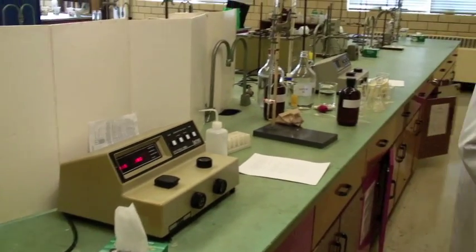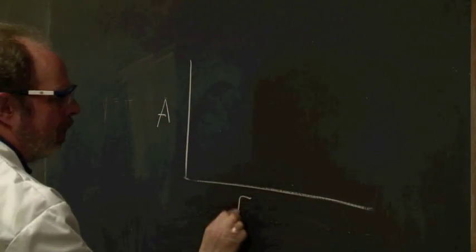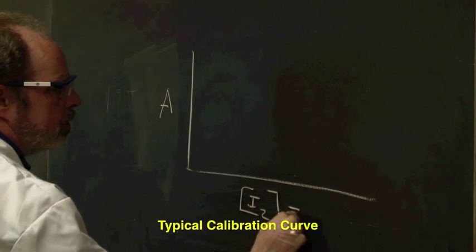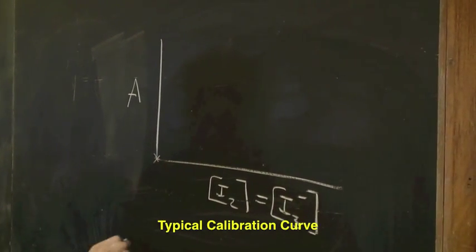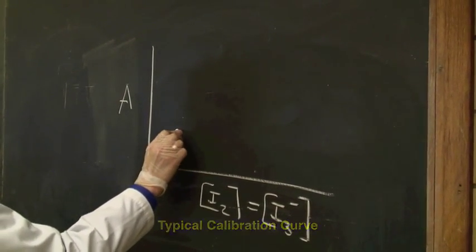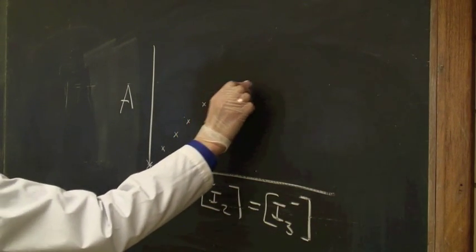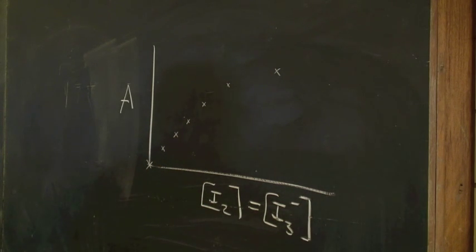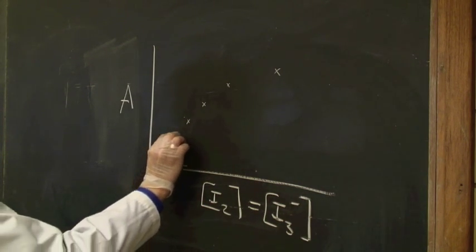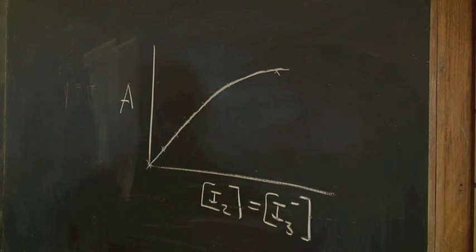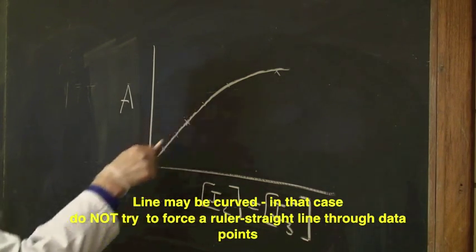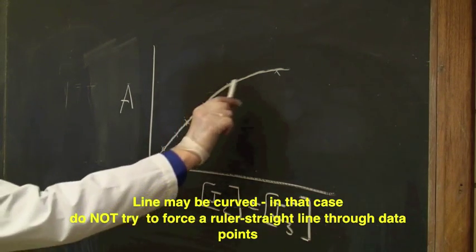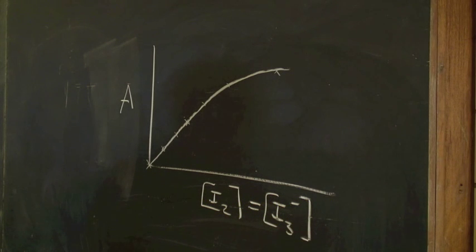Let's look at the board to see what one of those calibration curves is going to look like. The x-axis is concentration of I2, which is exactly the same as I3-, and the y-axis is absorbance. A blank solution will be zero and it will increase. The curve may not actually be a straight line — it's linear at lower concentrations and then it curves off. So make sure you don't try to force a ruler through all the data points. Some will be in a straight line if Beer's Law is being observed, but if it is flattening out, make sure your calibration curve actually curves.